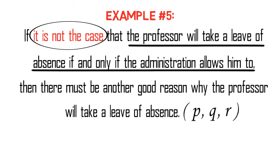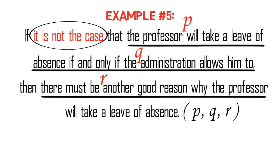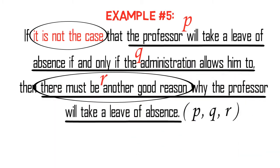Now, if we analyze the proposition, we notice that P stands for 'the professor will take a leave of absence,' Q for 'the administration allows him to,' and R for 'there must be another good reason why the professor will take a leave of absence.' You have to take note that we do not repeat the variable P for the proposition 'there must be another good reason why the professor will take a leave of absence,' because the thought of the proposition is completely changed — due to the addition of the idea 'there must be another good reason.' Thus, instead of repeating P, we use R.